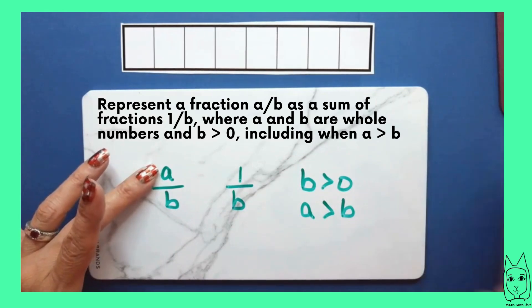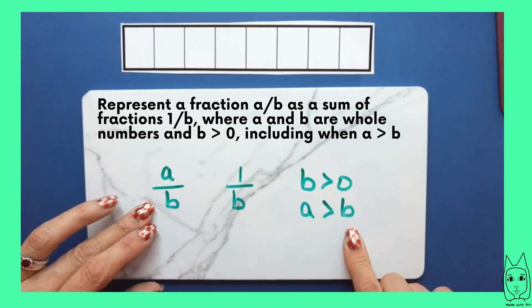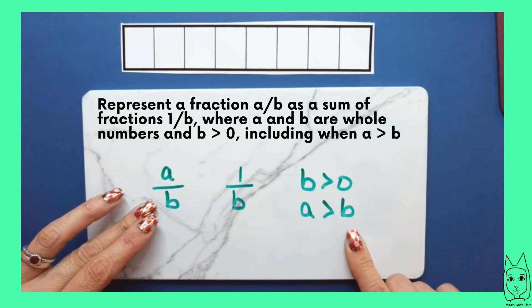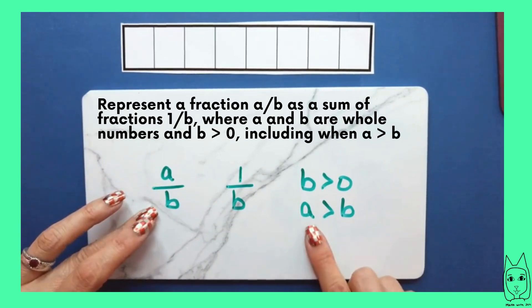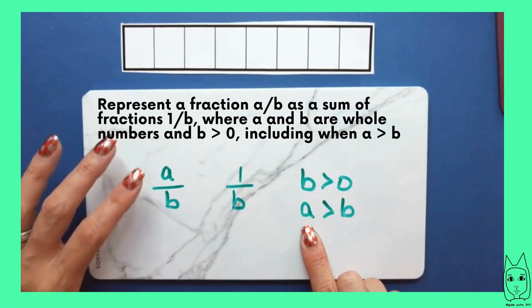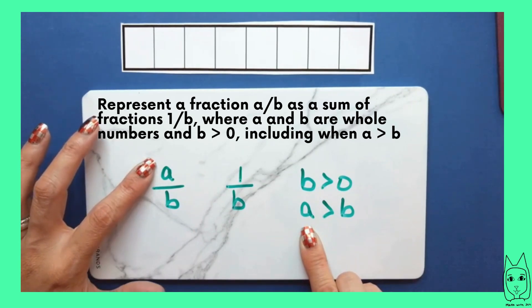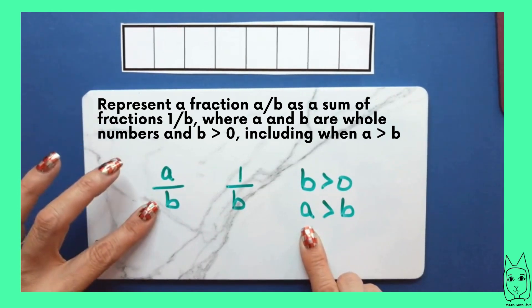The a is representing the numerators you're going to be looking at. For grade four, the numerator can be anything, including being greater than the denominator. In grade three, we looked at fractions that were less than a whole, so a had to be less than b. But in grade four, you're now going to look at both when the numerator is less than the denominator and when the numerator is greater than the denominator.